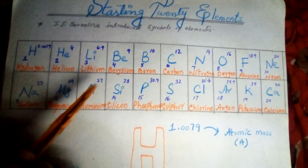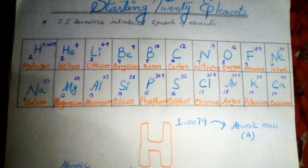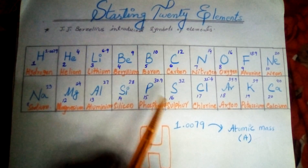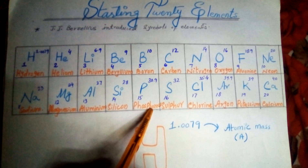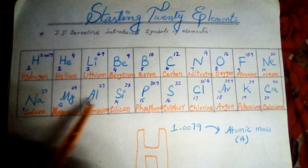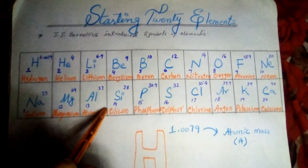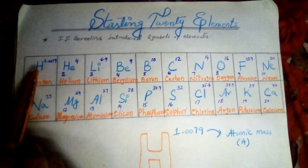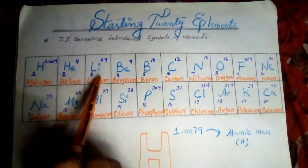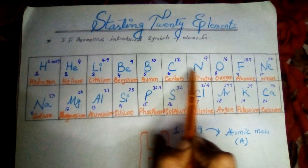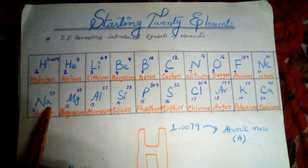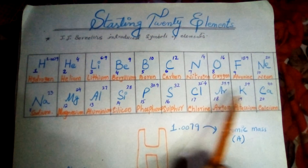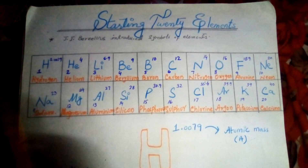Now I will teach you the sequence of 20 elements in a tune so that you can remember them. You won't forget these 20 elements. I will read out the sequence — I hope it will be easy: Heli Bep, Kanof Neena, Mughal Sepas, Kalar Kaka.